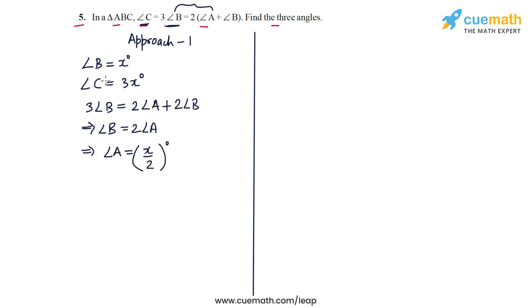So what I have done is I have written all the three angles of the triangle in terms of this variable x. And now I can use the fact that the sum of these three angles should be equal to 180 degrees. And this means that x plus 3x plus x by 2, the sum of the three angles, this should be equal to 180.